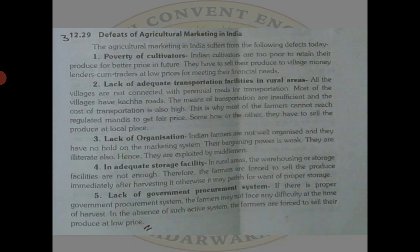Next are the defects of agricultural marketing in India. The first is poverty of cultivators. Cultivators are poor and do not have sufficient funds. Soon after production they have to sell it into the market, otherwise they cannot make payments and they cannot get a sufficient or actual price for their product.